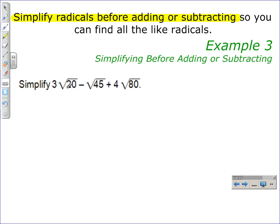When you attack a problem like this, where you're asked to simplify 3√20 - √45 + 4√80, you can notice that since these terms do not have the same radicand, they cannot be added together, at least as of now they can't be.